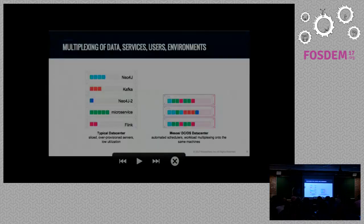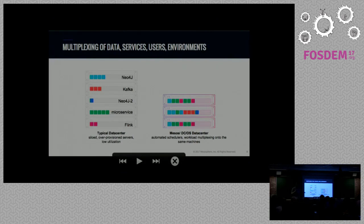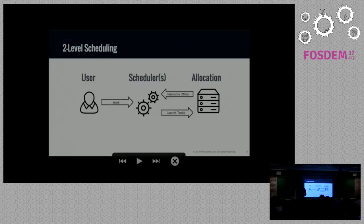One of the main drivers for a system like Mesos is the increasing number of frameworks that want to own their own sub-cluster. Nowadays we have Spark, Flink, Neo4j, and many others. Back when we just had Hadoop — one system wanting to own the entire cluster — that was kind of okay. But now with a lot of different systems wanting to own a cluster, it's not okay anymore.